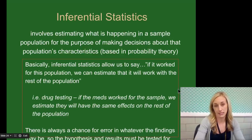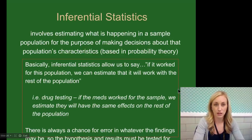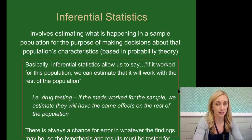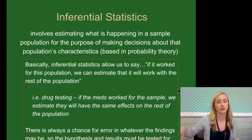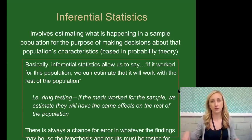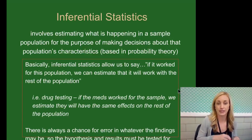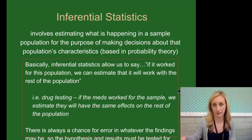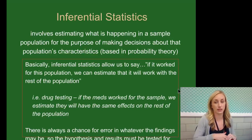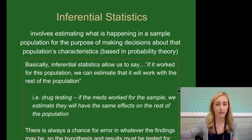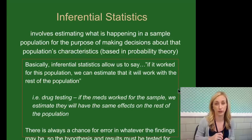Now let's talk about inferential statistics. These involve estimating what is happening in a sample population for the purpose of making decisions about the population's characteristics. It's based in probability theory: if this is happening in my sample, I'm able to generalize to my population. These statistics allow us to say if it worked for this sample, we can estimate it will work for the rest of the population. For instance in drug testing, if the meds worked for the sample — like testing the effectiveness of oxycodone — we estimate it will have the same effects on the rest of the population.